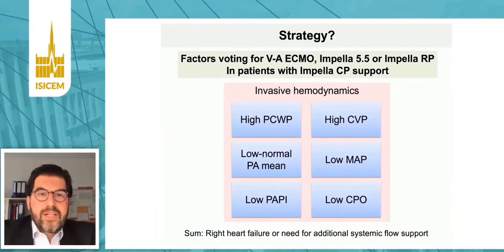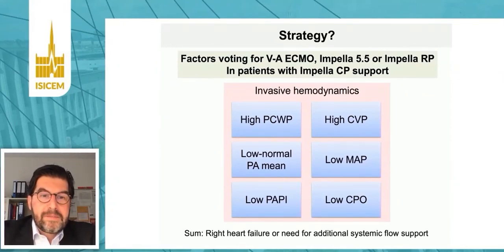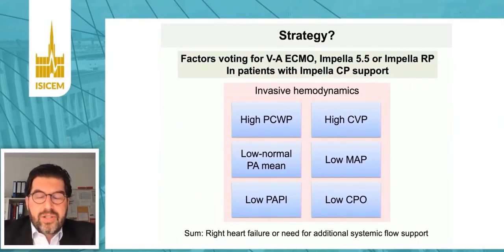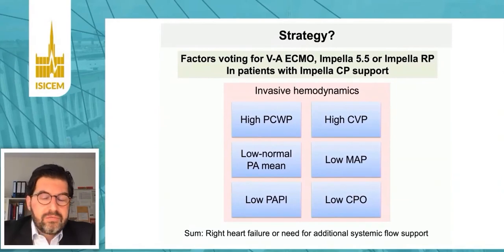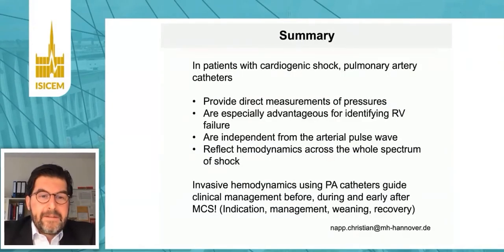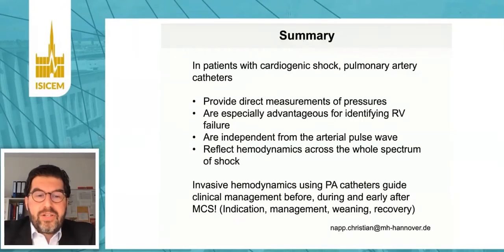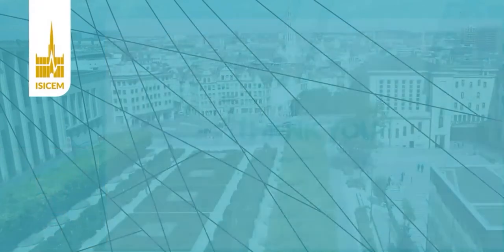In summary, in patients with cardiogenic shock, pulmonary artery catheters provide direct measurements of pressures, with special advantages for identifying RV failure. They are independent from the arterial pulse wave — a strong advantage compared to other hemodynamic monitoring systems — and reflect hemodynamics across the whole spectrum of shock from pre-shock stage A until stages D and E. Invasive hemodynamics using PA catheters essentially guide clinical management before MCS, during MCS, and early after MCS in the very vulnerable phase of weaning and recovery.